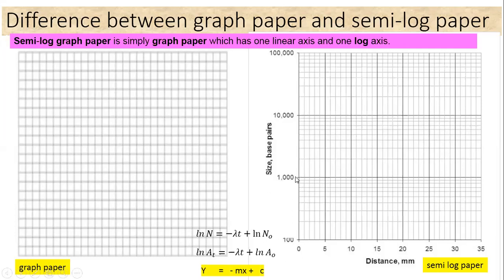Within each cycle, the baseline is the beginning of the cycle. For example, if the baseline is 100, then each line above is a multiple of the baseline: 200, 300, 400, 500, 600, 700, 800, 900, and 1,000. So the values increase as multiples of the baseline up to the top of the cycle.